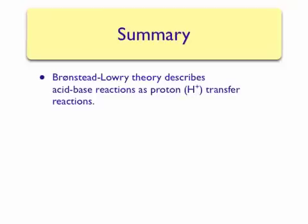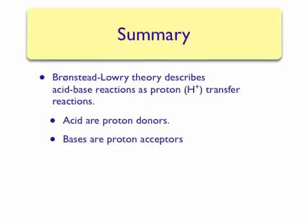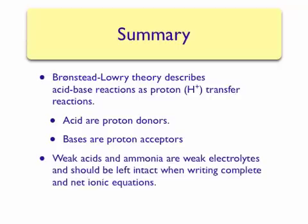To summarize this lecture: we use Bronsted-Lowry theory to describe acid-base reactions as proton transfer reactions. Note that Bronsted-Lowry theory also includes Arrhenius acids and bases — Arrhenius acids are Bronsted-Lowry acids, and Arrhenius bases are also Bronsted-Lowry bases. However, the Bronsted-Lowry definition is that acids are proton donors and bases are proton acceptors. We also saw that weak acids and ammonia are weak electrolytes, and when writing complete and net ionic equations they should not be dissociated into ions. Therefore, it is very important to memorize the list of strong acids and strong bases so that you can easily identify strong and weak acids, especially when dealing with acid-base reactions.